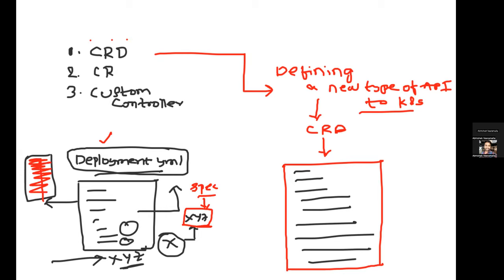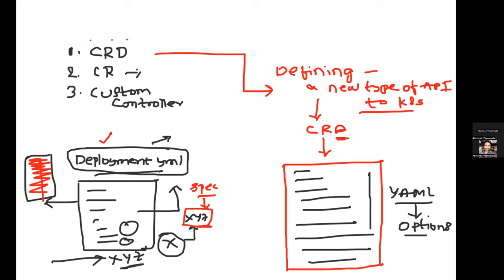Similarly, a custom resource is a new resource submitted to Kubernetes. Before anyone submits it, Kubernetes asks you to define a new type of API using the custom resource definition. The CRD is a YAML file which introduces a new type of API to Kubernetes and has all the fields a user can submit in the custom resource. Just like a deployment.yml has a resource definition in Kubernetes, we call this a custom resource definition, and what the user submits is called a custom resource.